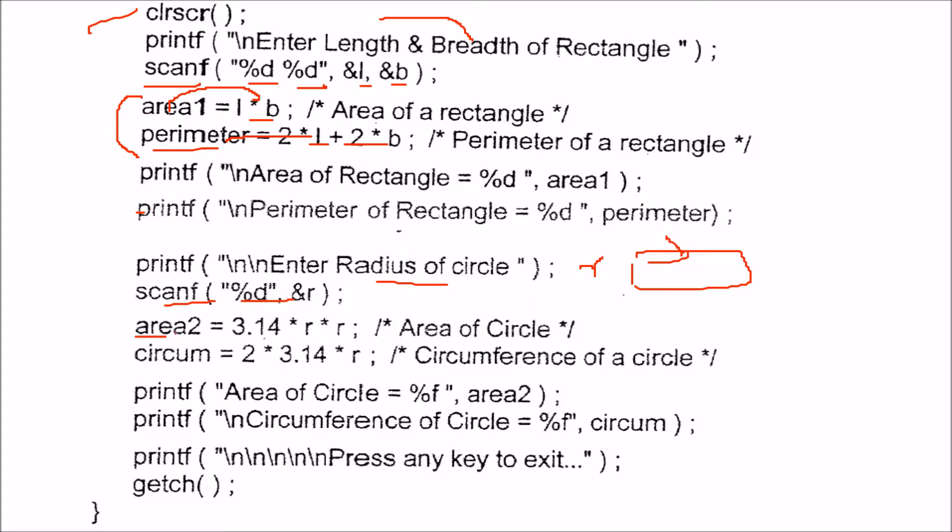Now area of the circle will be pi R square. So 3.14 will be taken as 3.14 is for pi, R into R. And circumference will be 2 into pi into R - 2 into 3.14 into R.